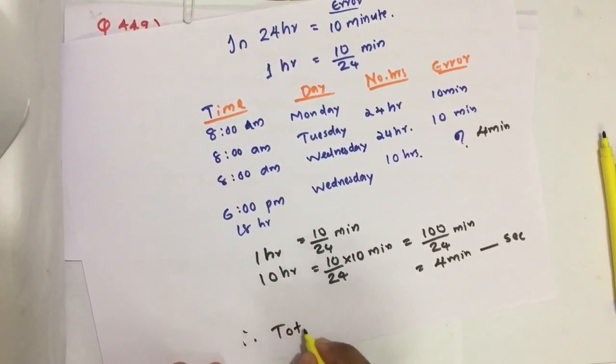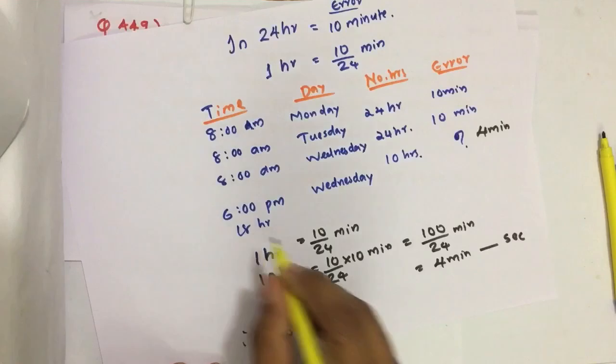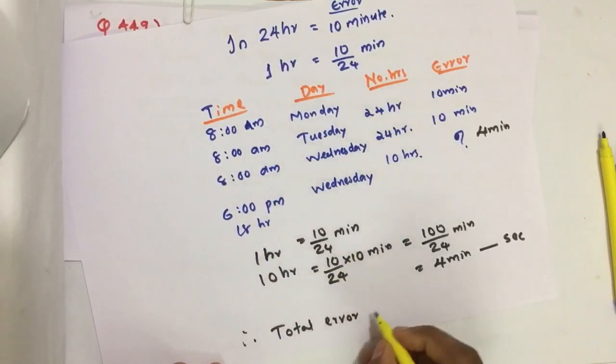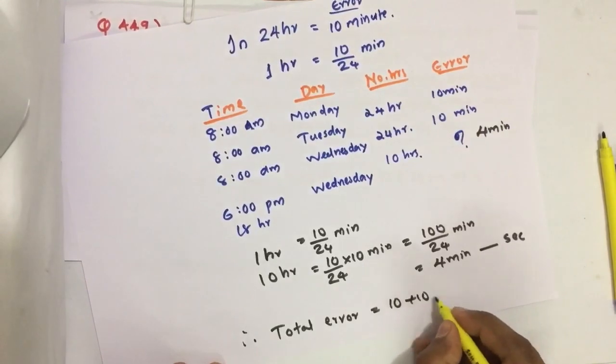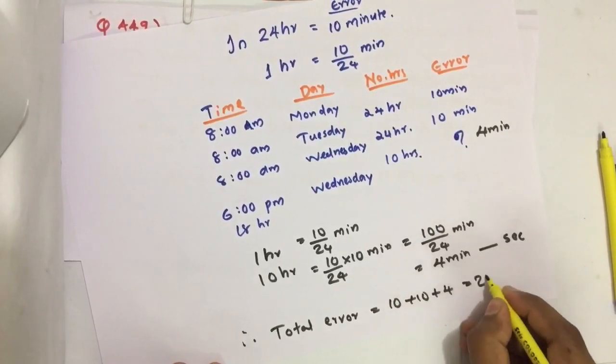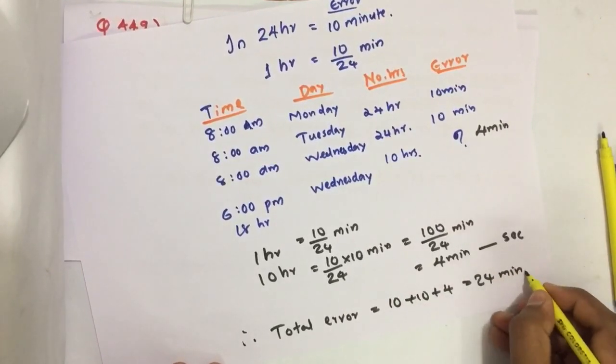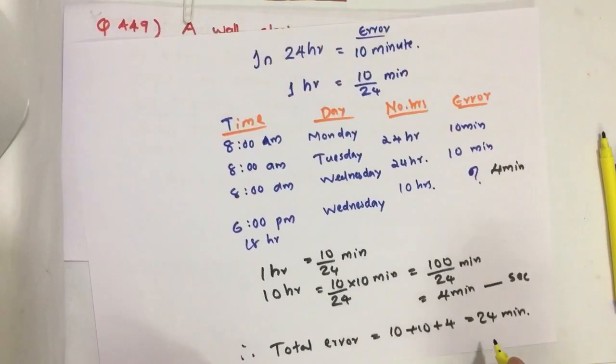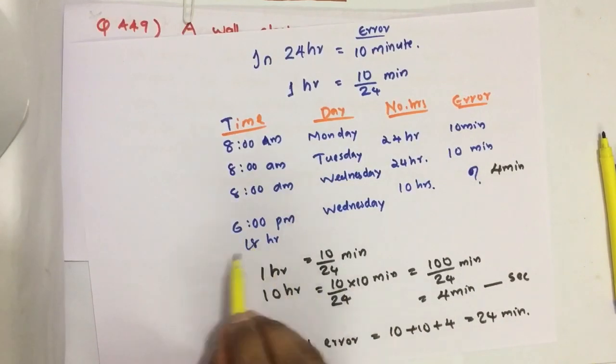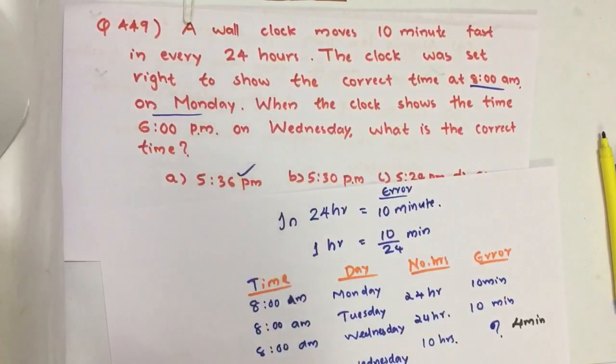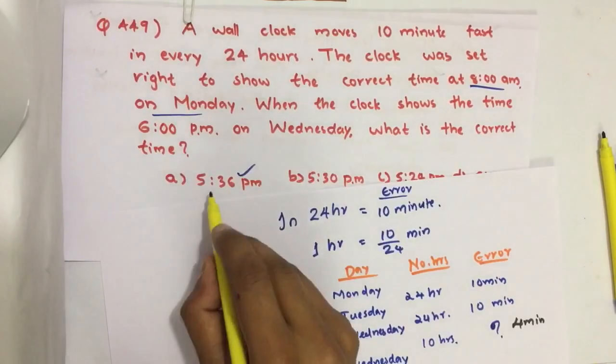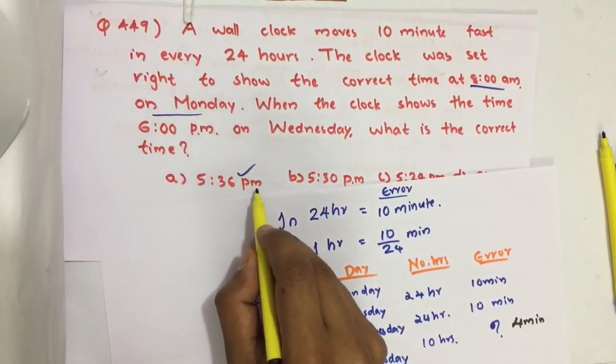Therefore total error at 6 p.m. Wednesday equals 10 plus 10 plus 4, that is 24 minutes. That means the actual time is 24 minutes before, deducted from 6 p.m., that is 5:36 p.m. So our answer is option A, 5:36 p.m.